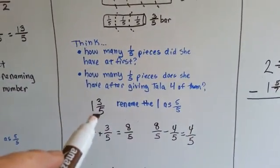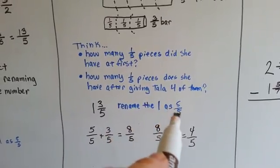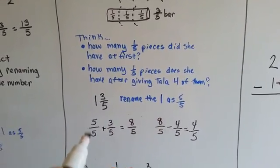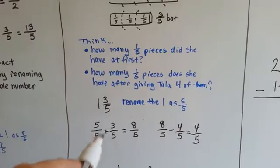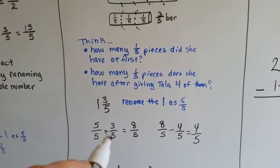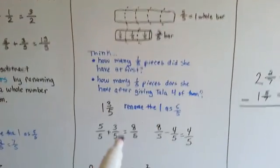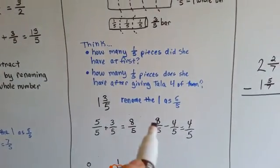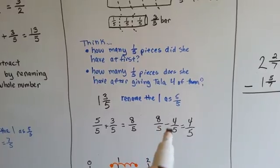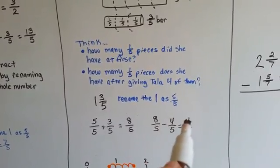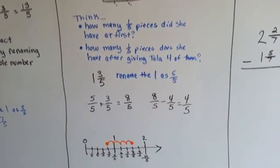So, the one and three-fifths, we rename the one as five-fifths. Five-fifths is that whole one, plus that three-fifths is right there, that makes eight-fifths. Now, we can take the four-fifths away from eight-fifths, right? So, eight-fifths minus four-fifths, eight minus four is four, four-fifths.